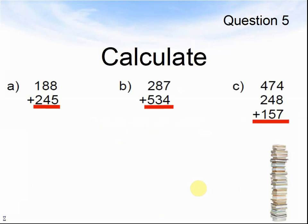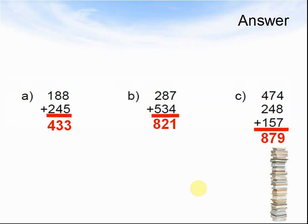Let's look at the next question. Question 5. Pause the video until you are ready to see the answer. Here comes the answer. 188 plus 245 makes 433. B. 287 plus 534 makes 821. C. 474 plus 248 plus 157 makes 879.